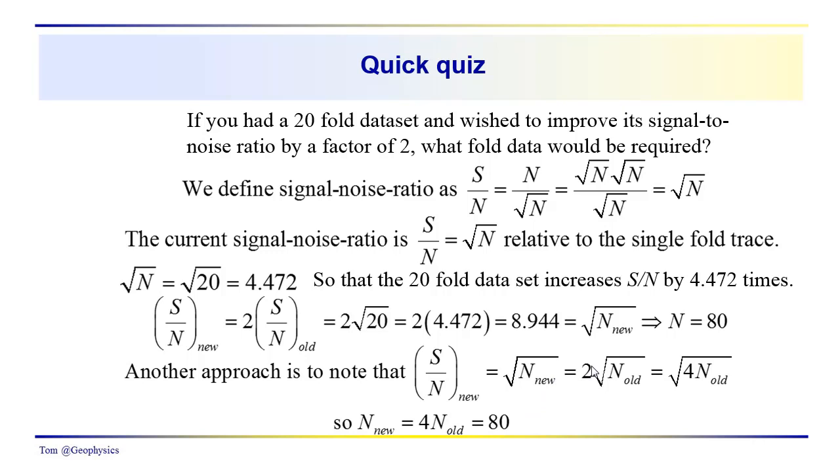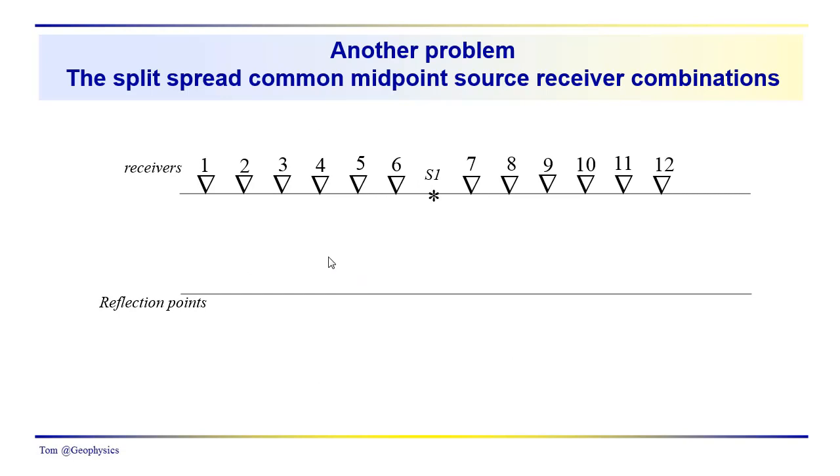So if we wanted to have a 4-fold increase, what would we need? Well, we would actually need 16 times the number of traces that we had, which would be about 320 or so. So you can see you have to collect a lot of additional data in order to get a doubling of your signal-to-noise ratio. So it doesn't come without a certain cost in terms of labor. And if 20 was good, then you probably may have wanted to stick with that.